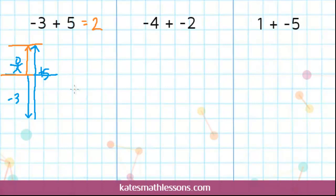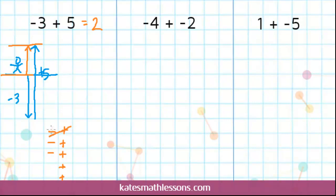Another way to visualize this problem would be to draw positive and negative signs for each number. This negative 3, you could represent that by drawing 3 negative signs: 1, 2, 3. And you have a positive 5, so you could represent that by drawing 5 positive signs. If you put a plus 1 with a minus 1, they cancel out — you can think of it as giving someone a dollar and taking the dollar away; you're essentially doing nothing. So these cancel, this pair would cancel, and this pair would cancel. If you look at what's left over, you have 2 positives. So your answer is a positive 2 — you had more positives than negatives.